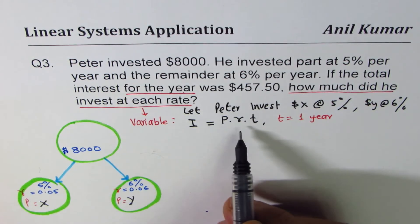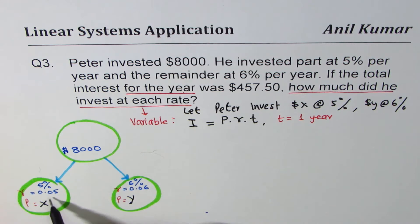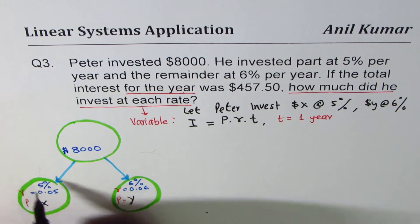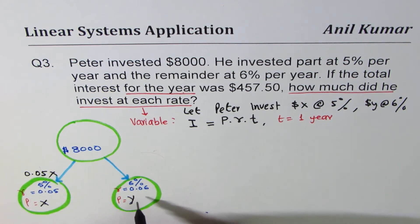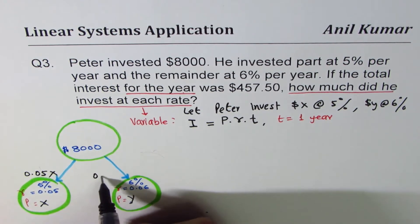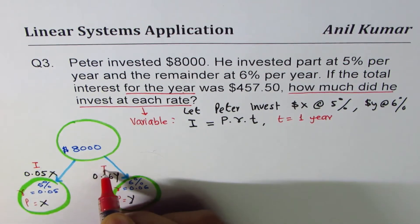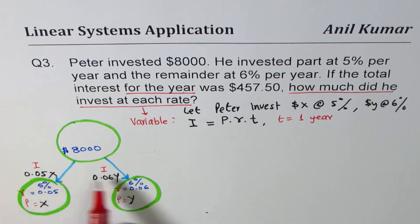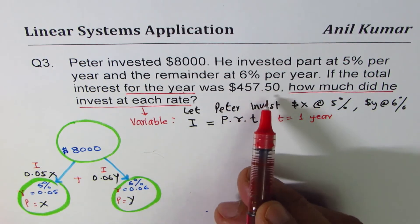If you invest x dollars at 5%, the interest is x multiplied by the rate. So the interest on x is 0.05x, and the interest on y is 0.06y. The total of these two interests is $457.50, which gives us our second equation.